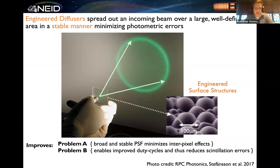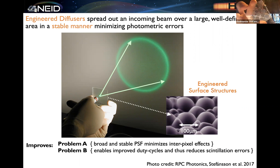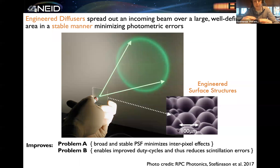Let's dive into engineered diffusers. First off, what are engineered diffusers? I actually have one with me here — maybe I can show you a quick live demonstration of what these diffusers are. A diffuser is essentially a nanofabricated piece of optic, usually consisting of a glass substrate with a thin polymer layer on top, with very intricately engineered surface structures on the surface of it.